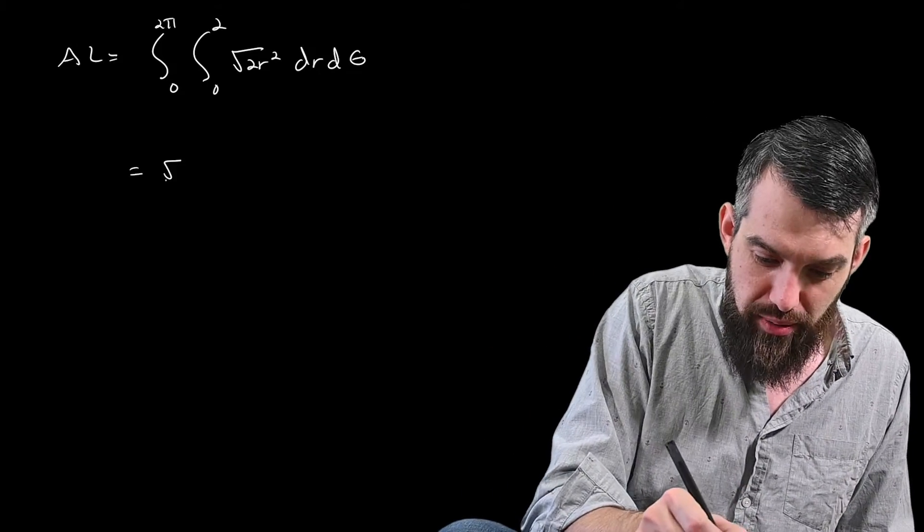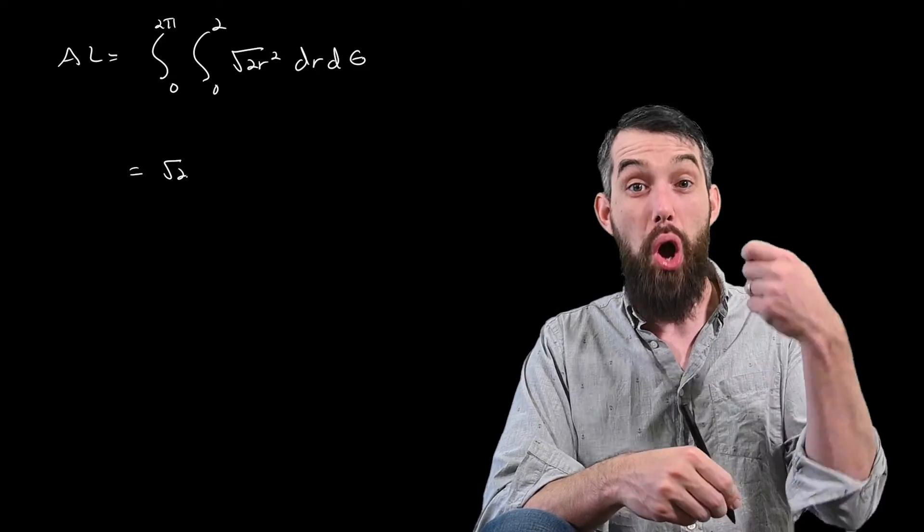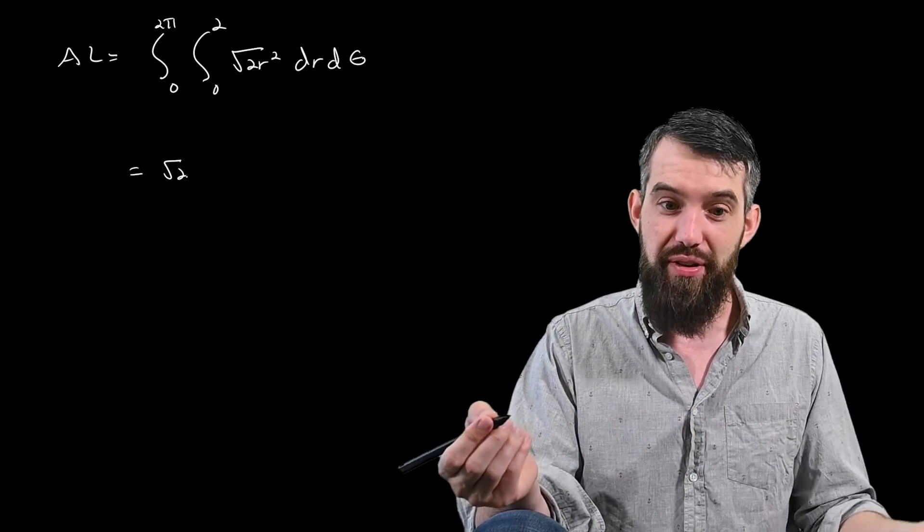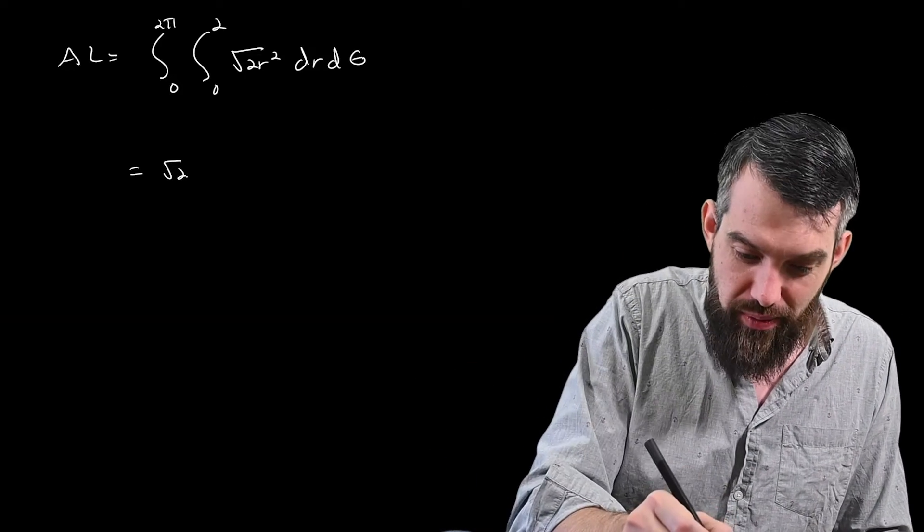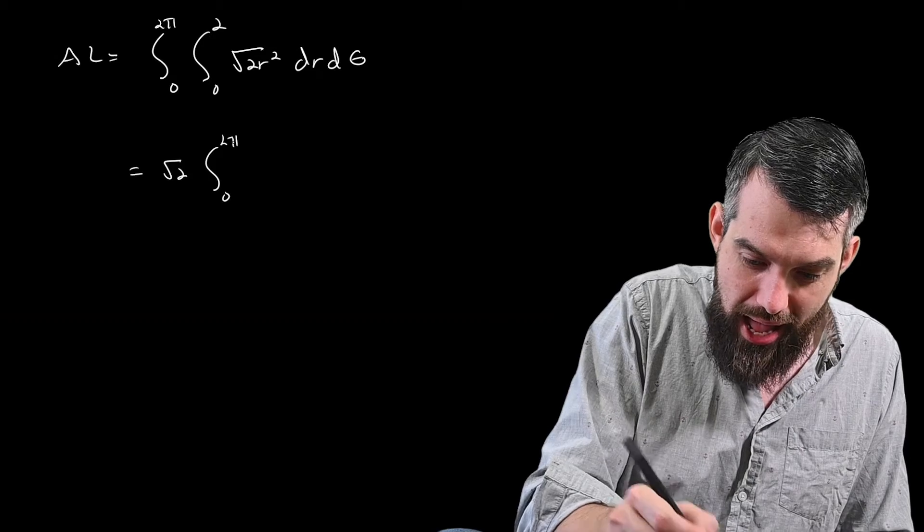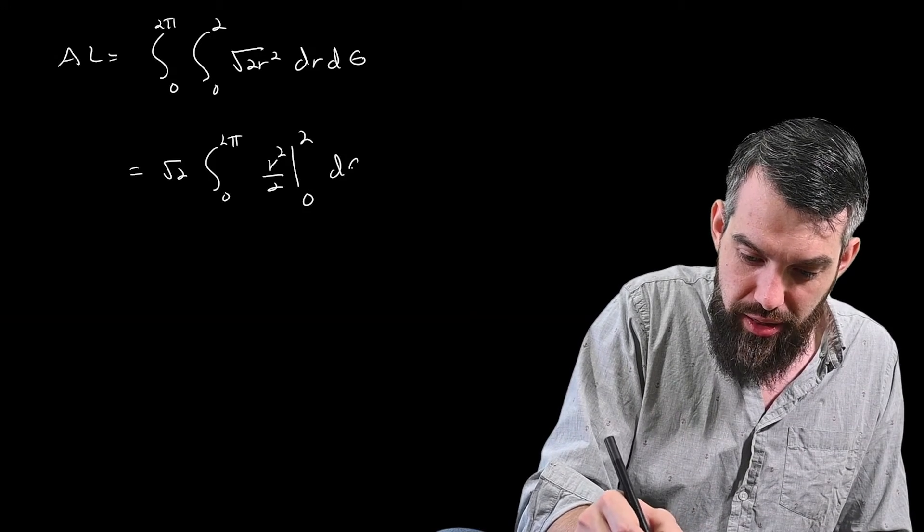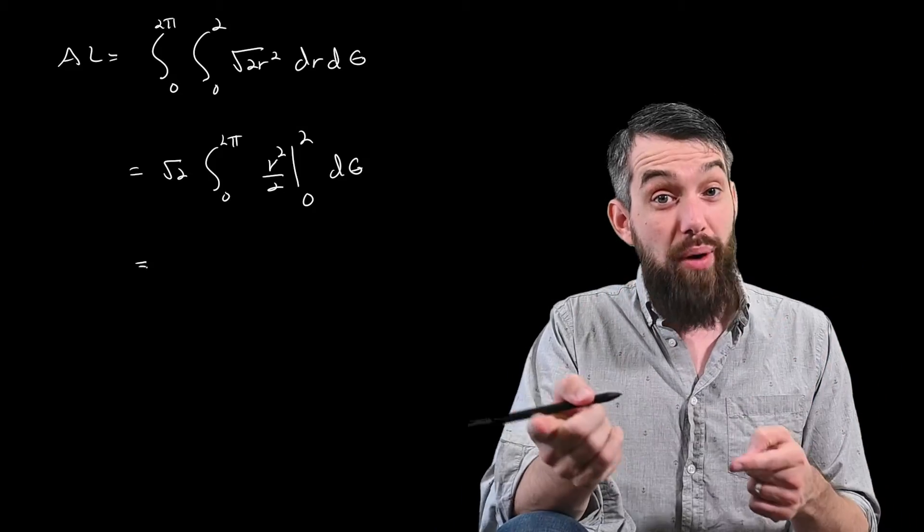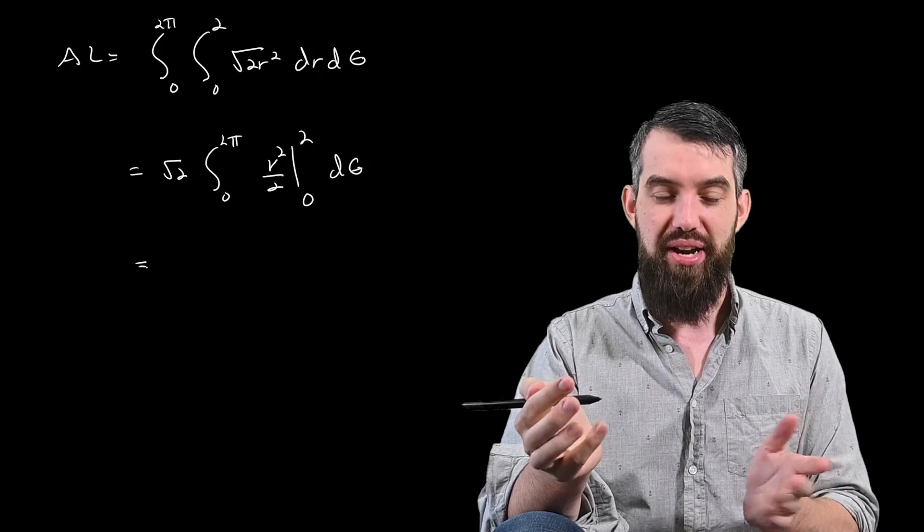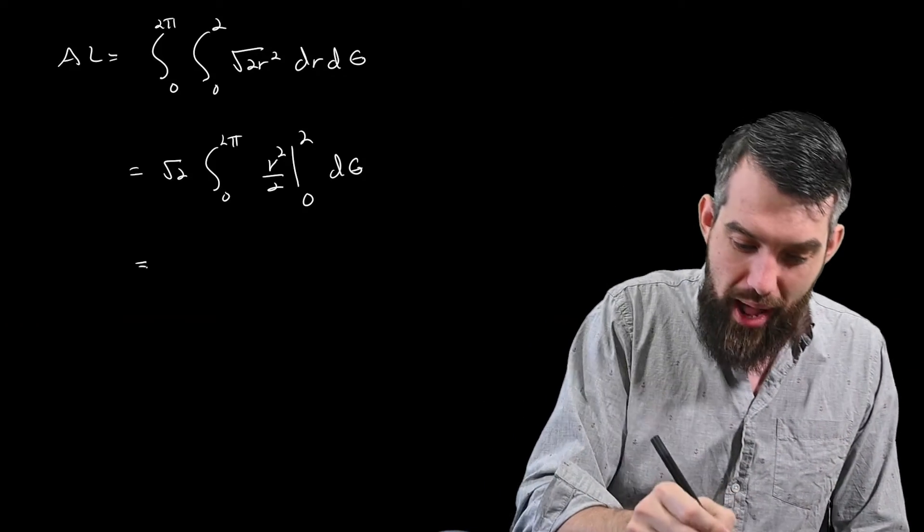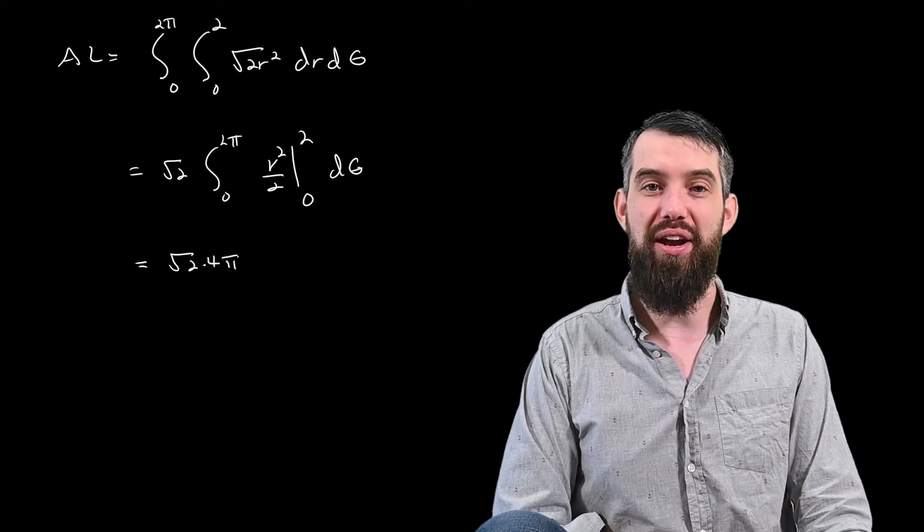This is all straightforward, so the square root of 2 is going to come out the front. Square root of r squared is just r, since r is always positive. This is, of course, going to integrate into r squared divided by 2. So I'll write 0 to 2π and then r squared over 2 from 0 up to 2 dθ. That integrand evaluates into 4 over 2, which is just 2, and then I'm integrating it from 0 to 2π, and so I'm going to get 4π. So √2 times 4π, final answer.